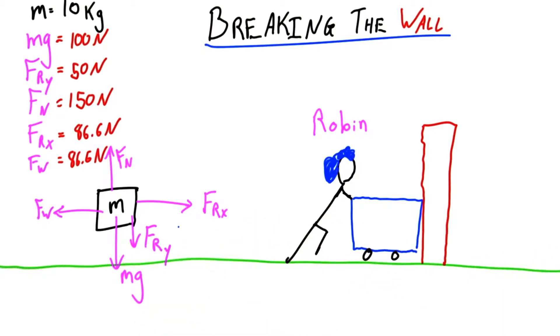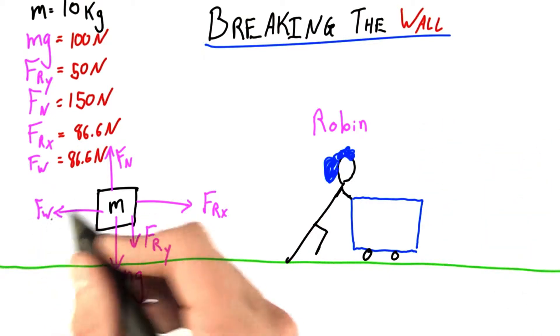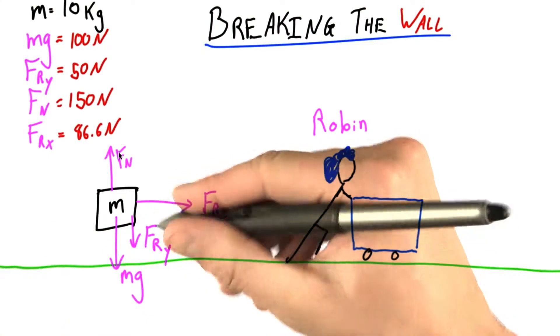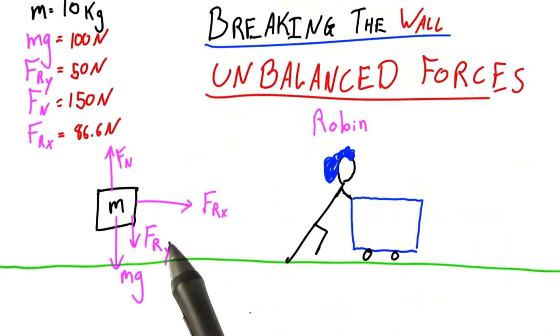Speaking of breaking things down, what if Robin succeeds? What if she breaks this wall apart? The force provided by the wall, of course, it has to go away. And what do we have now? Now we have unbalanced forces.